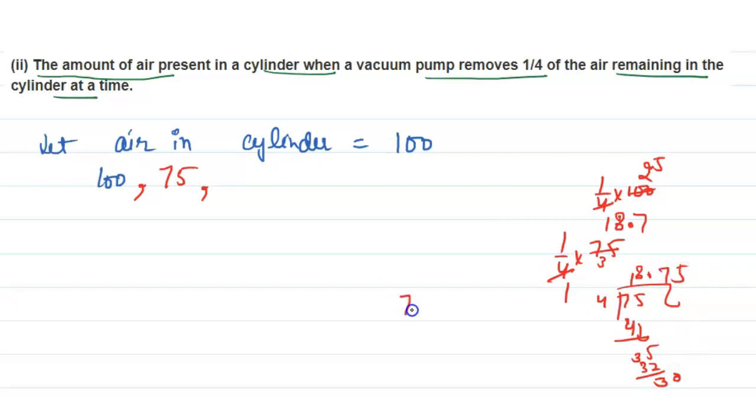So 75 minus 18.75, the air present is 56.25. Now we need to find the common difference.